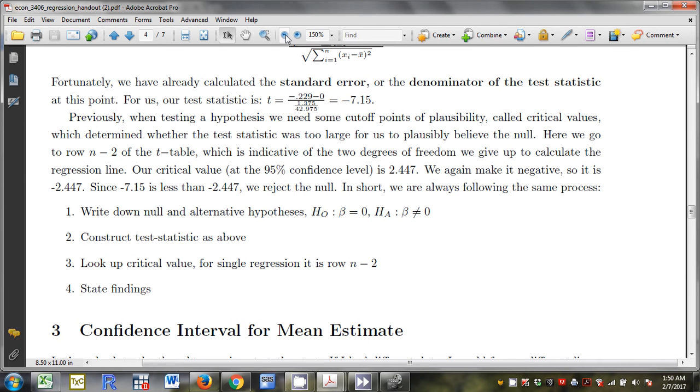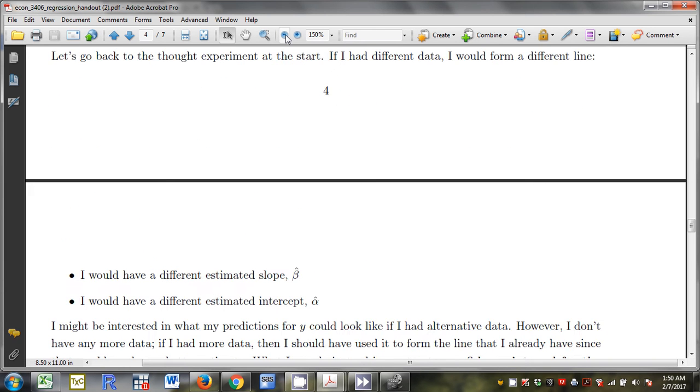Now we're going to go to row 6 of the t-table to get a critical value. We do get a critical value of 2.447. We're going to make it negative and we're going to reject the null. We're always going to have the same process, writing down a null and an alternative, constructing a test statistic, looking up a critical value and stating findings.